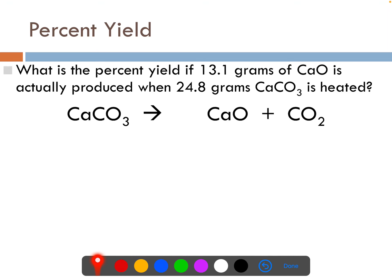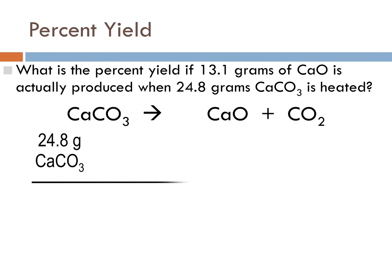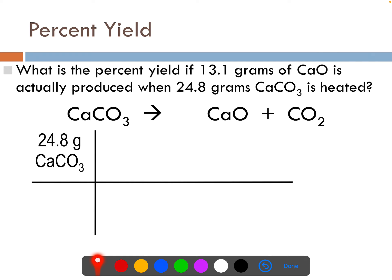Here's an example of what one of these problems might look like. What is the percent yield if 13.1 grams of CaO is actually produced when 24.8 grams of CaCO₃ is heated? So what you're going to do is you're going to start with the calcium carbonate. I want to know how much calcium oxide theoretically should I produce if I start with 24 grams of calcium carbonate.